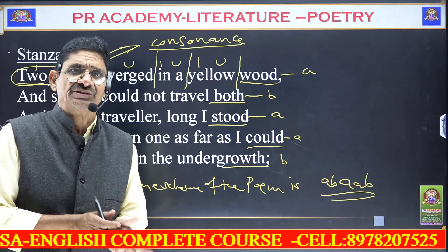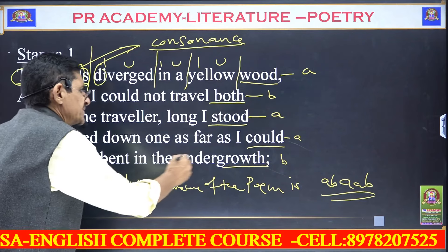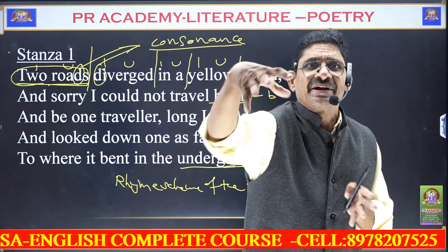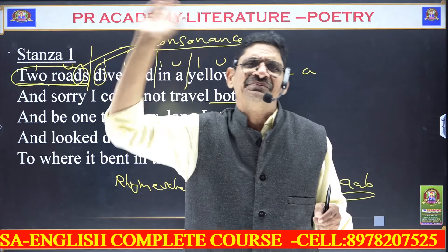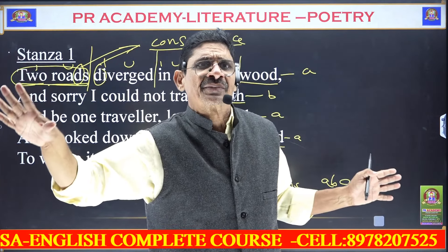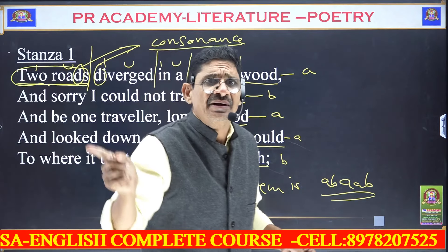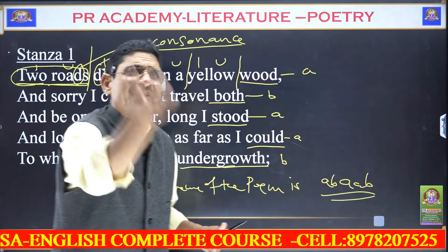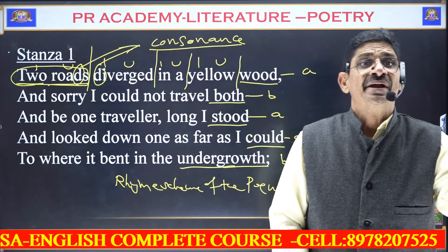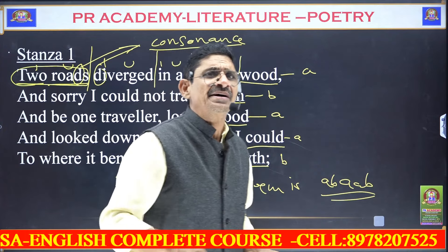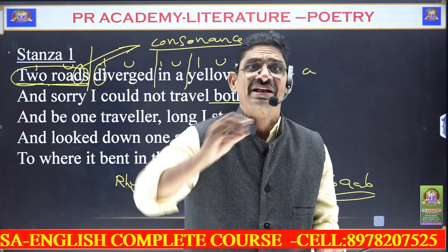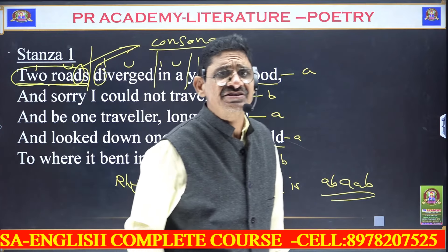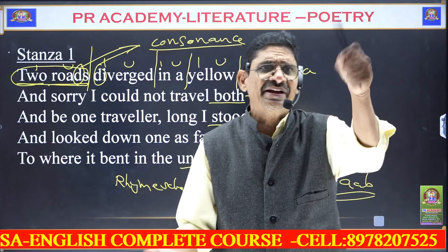'Look down as far as I could to where it bent in the undergrowth' — here 'undergrowth' represents future life. So this is symbolism: the undergrowth refers to the unknown future. To summarize the symbolism: two roads represent life choices, yellow wood represents maturity, and undergrowth represents what will happen in the future, which is unknown.